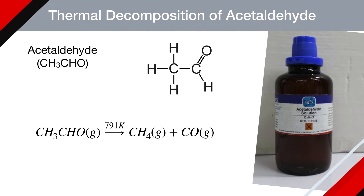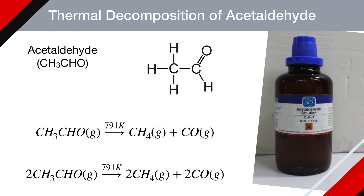The reaction appears to be of the first order, but experimentally it is found that the reaction is of second order because two molecules of acetaldehyde take part in the reaction. So the reaction can be written as: acetaldehyde gas at 791 K produces methane plus carbon monoxide, or two molecules of acetaldehyde on heating at 791 K produce two molecules of methane and two molecules of carbon monoxide gas.